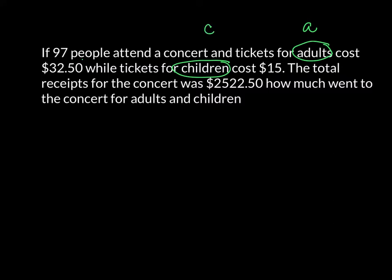The big piece with this is this first statement, that 97 people attended a concert. That gives me my first equation. I know that the number of adults plus the number of children is equal to 97.